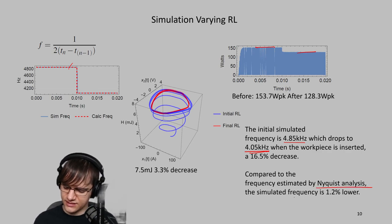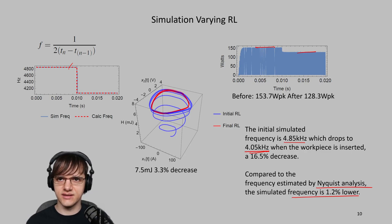And compared to the Nyquist analysis, the simulated frequency is 1.2% lower than what the Nyquist estimated to be. That's a pretty good result.